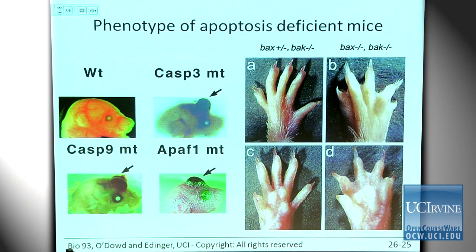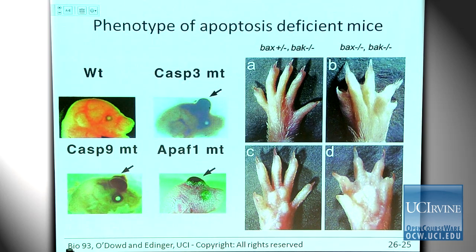In mice with deletions in genes required for programmed cell death, neurons in the brain persist and aren't pruned. As a result, those mice develop exencephaly — their brains spill out of their skulls because there isn't enough room for all the neurons. Another example: a mouse lacking two proteins needed for apoptosis fails to clear its inter-digital webs between its toes, while the normal mouse does. Remember, your final exam is a week from Wednesday.